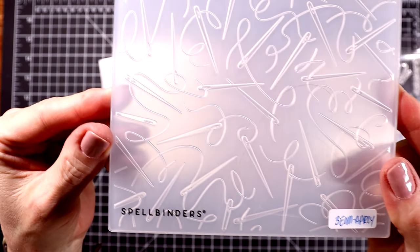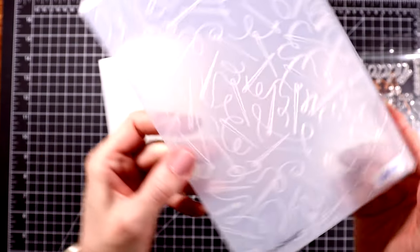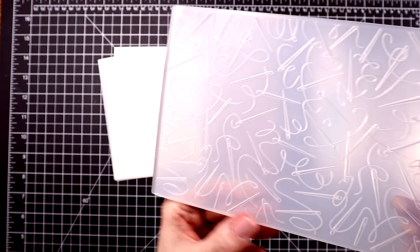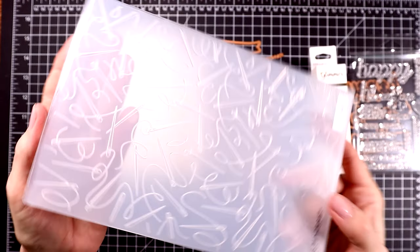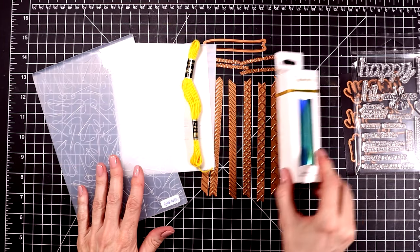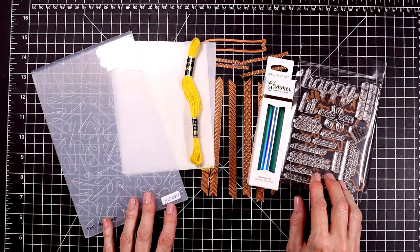Last I have the 3D embossing folder of the month and this one is called one stitch at a time. And as you can see it's filled with needles and threads. Okay so let's get started on card number one.